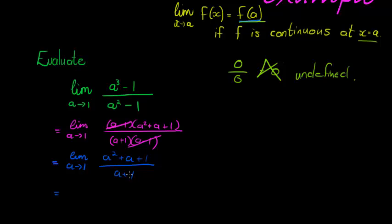But this time, at least when I substitute into my fraction, I don't get a 0 in the denominator. Which is going to mean that this is 1 squared plus 1 plus 1 over 1 plus 1, which equals 3 over 2.